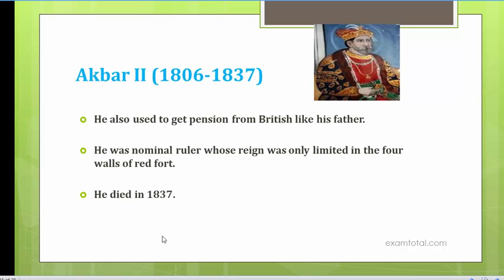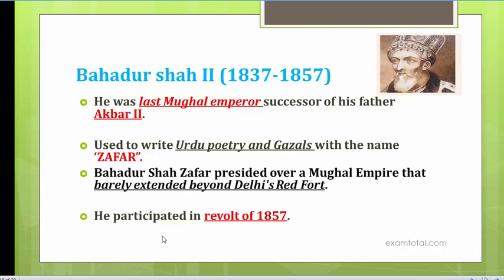The next ruler after Akbar II was Bahadur Shah II, who ruled from 1837 to 1857 and was the last Mughal Emperor. He was the son of Akbar II and was also just a nominal ruler. His full name is popularly known as Bahadur Shah Zafar — he was a prolific Urdu poet and ghazal writer who used the pen name 'Zafar.' The Mughal power had shrunk to such an extent that it was limited to the four walls of the Red Fort, and Bahadur Shah Zafar presided over an empire that barely extended beyond Delhi's Red Fort.